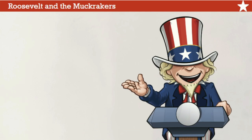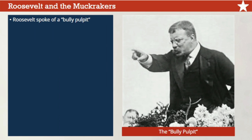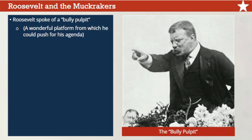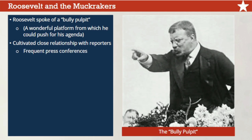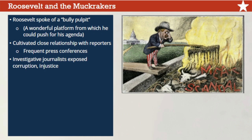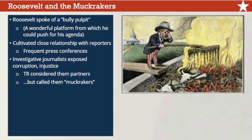Young, energetic, and passionate about reform, Theodore Roosevelt was a different kind of president. He spoke of the presidency as a 'bully pulpit' — an old-fashioned term for a wonderful platform from which he could push his agenda. Roosevelt cultivated a close relationship with many reporters, inviting them into the White House and holding frequent press conferences, sometimes in the middle of his afternoon shave. Journalism was undergoing a revolution in the early 20th century, as many reporters became investigative journalists making it their business to expose government corruption and social injustice.